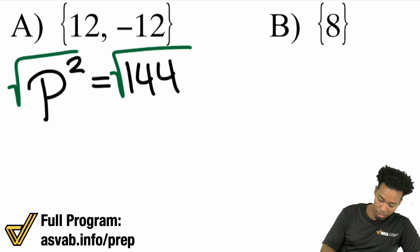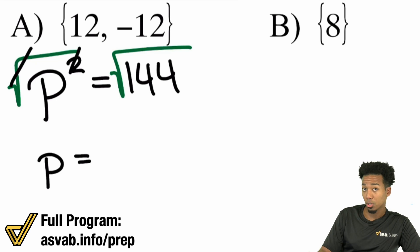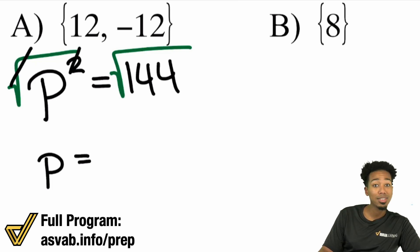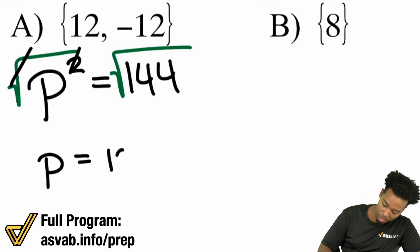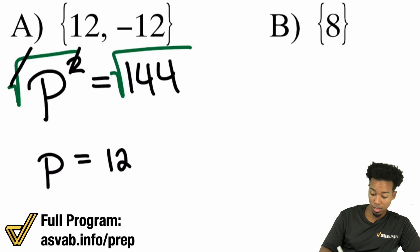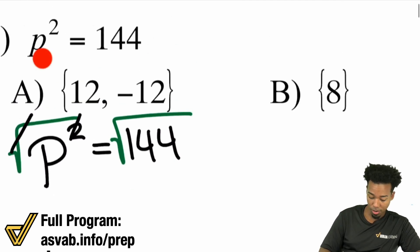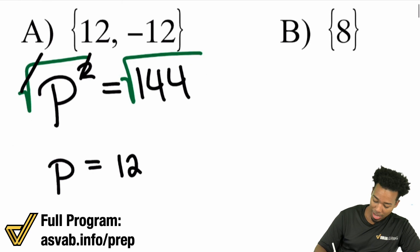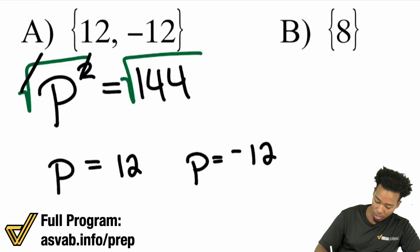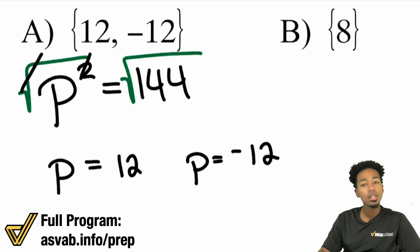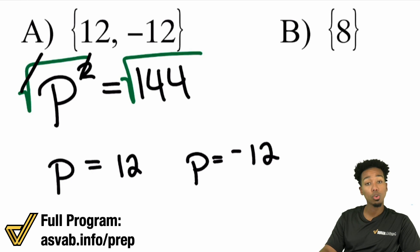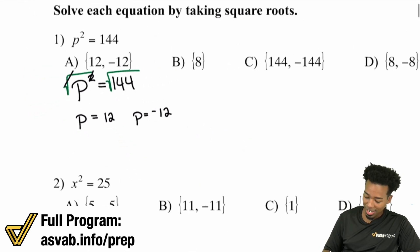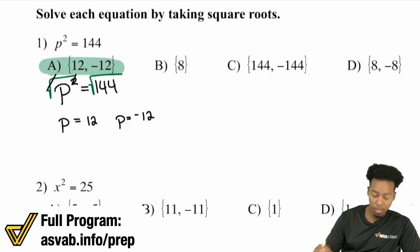And boom — you cancel the square with a square root. So we have p equals... now this is where things get tricky. When you're taking the square root of a positive number, the result is positive and negative. p equals positive 12 works because 12 times 12 is 144. But you also have to include negative 12, because negative 12 times negative 12 is positive 144. So we include both the positive and negative result, and that's why A is the answer.